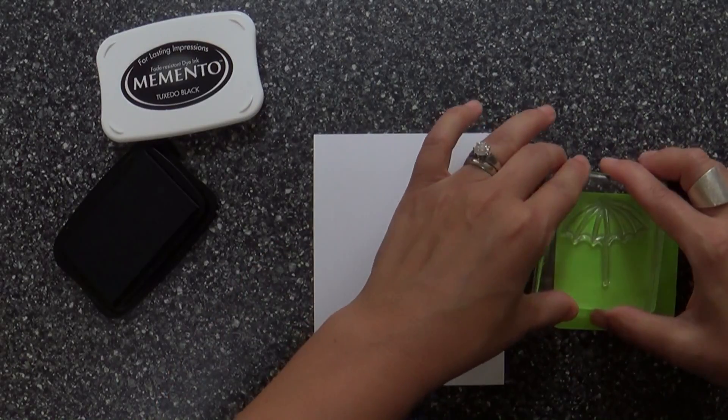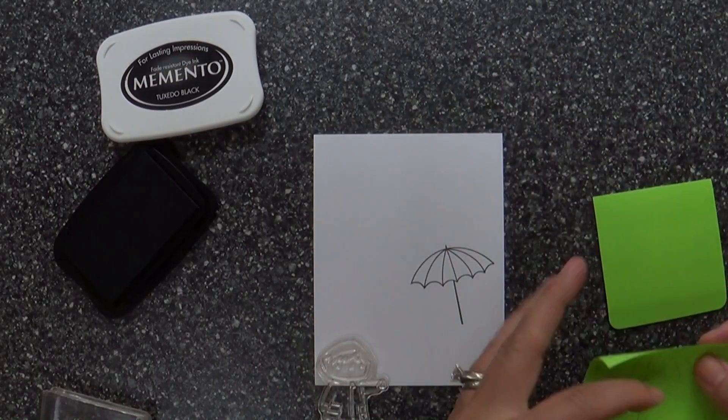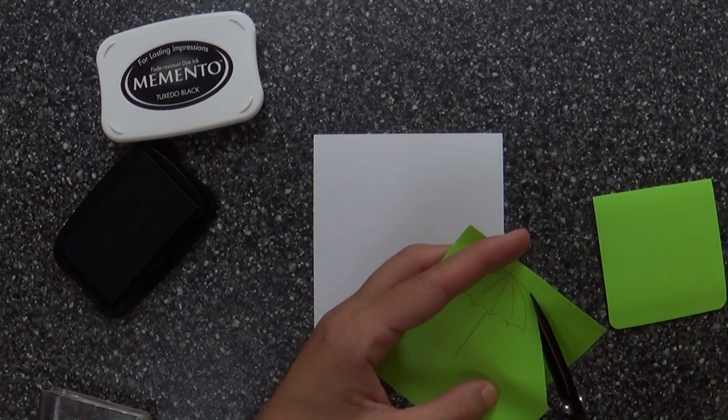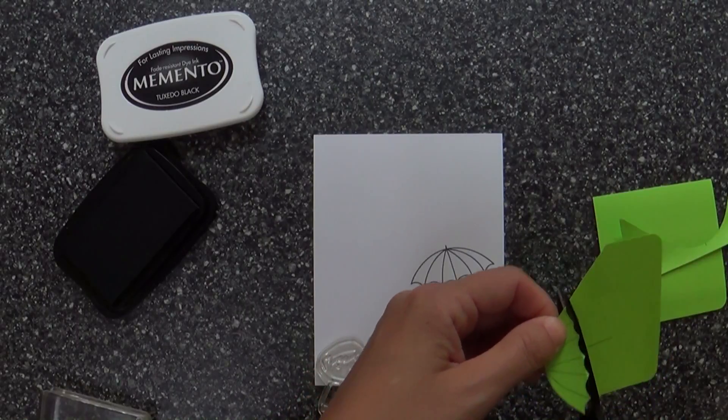So I'm starting with the umbrella, stamping it, and then I'm stamping it off onto some full sticky post-it note. You've been seeing me use this a lot. It's great for masking. And I'm going to mask off all my images because I'm going to add some ink blending.